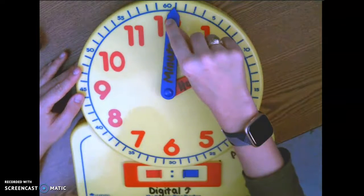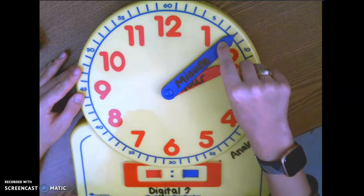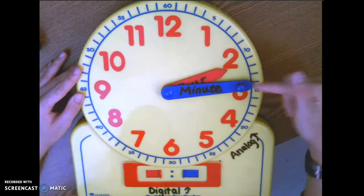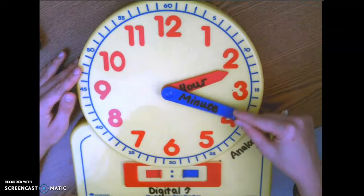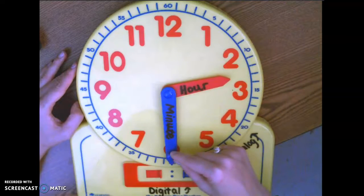Watch how my minute hand is moving kind of quickly and my hour hand is moving a lot slower because an hour is 60 minutes. We have to get through all 60 minutes before we go to the next hour.